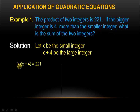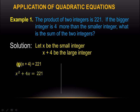Next, we form the equation because it says the product of the two integers is 221. We know that x and x plus 4 are the integers, so we multiply them. We have x squared plus 4x equal to 221, since x times x is x squared and x times 4 is 4x.